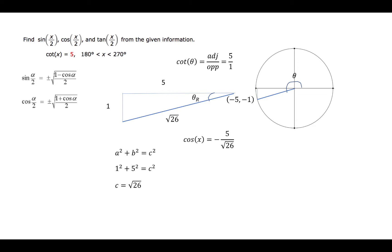We see that in the formulas for the sine and the cosine, we will need the cosine value of x. Since we're in the third quadrant, the cosine will be negative, and its ratio is adjacent over hypotenuse. So that would give us negative 5 over the square root of 26. We're also going to need to have an idea of where the angle x over 2 is. We'll need this because in the half-angle formulas we have plus or minus signs, so we have to decide which to use — the positive or the negative.